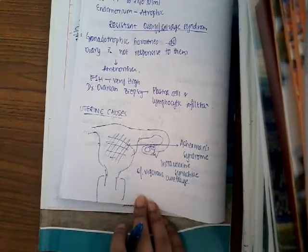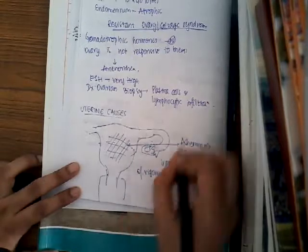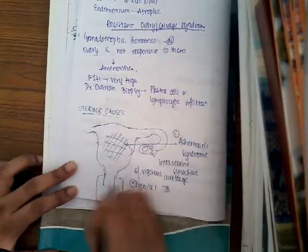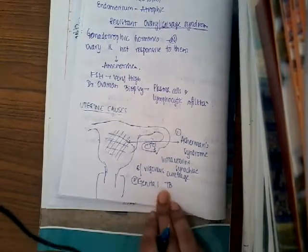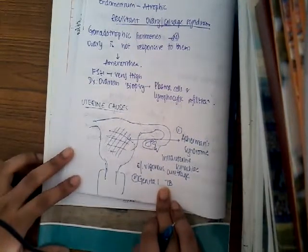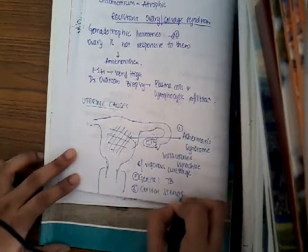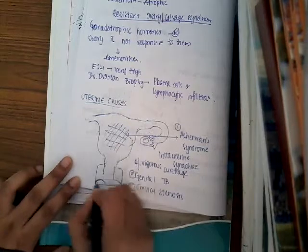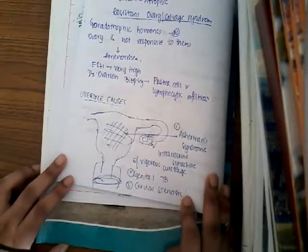Mostly when the functional basal layer of the endometrium is scraped off, there is an increased chance of formation of these adhesions. The second cause is genital tuberculosis, where there is formation of caseous necrosis in the uterus, which may transform into adhesions. The third cause is cervical stenosis, which most commonly occurs after cone biopsy or cervical amputation, leading to cervical stenosis.